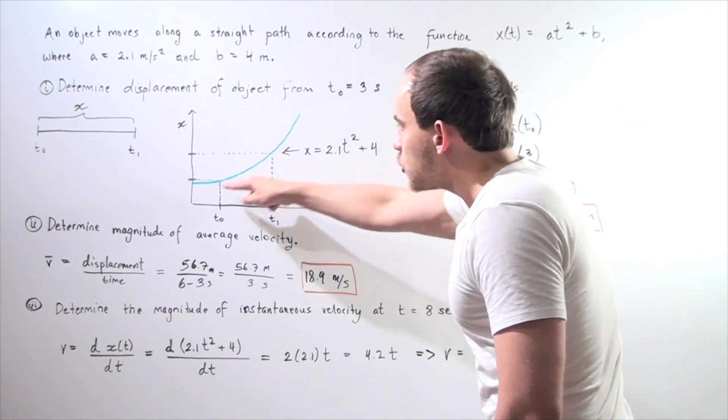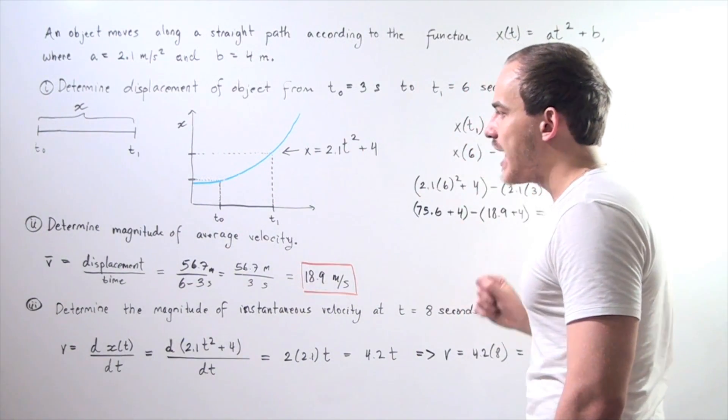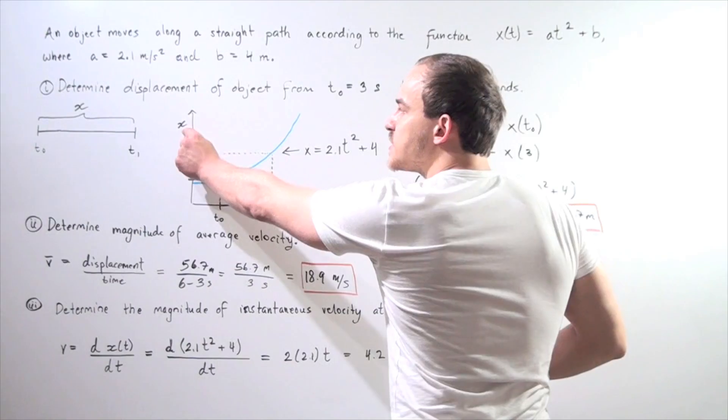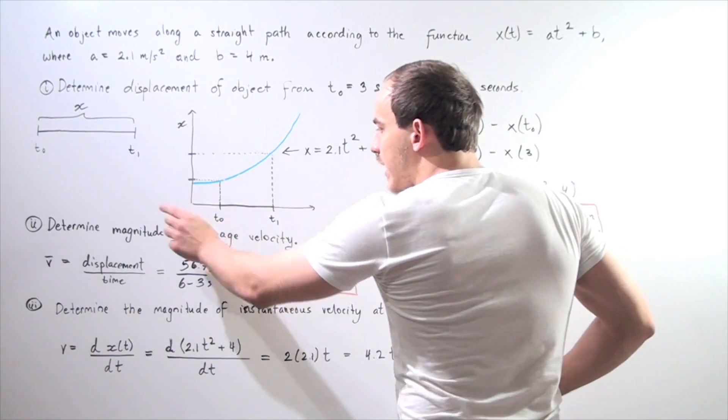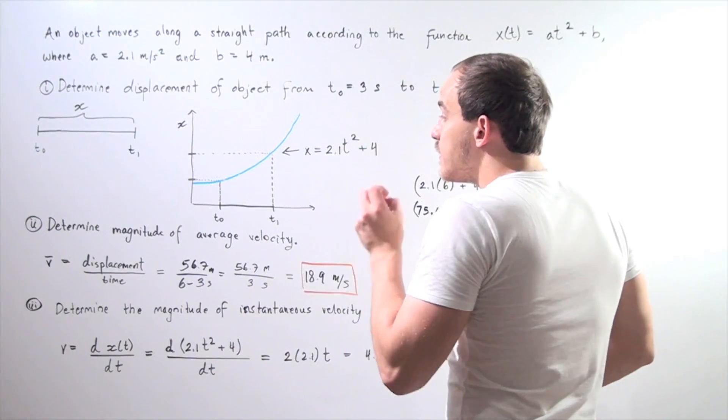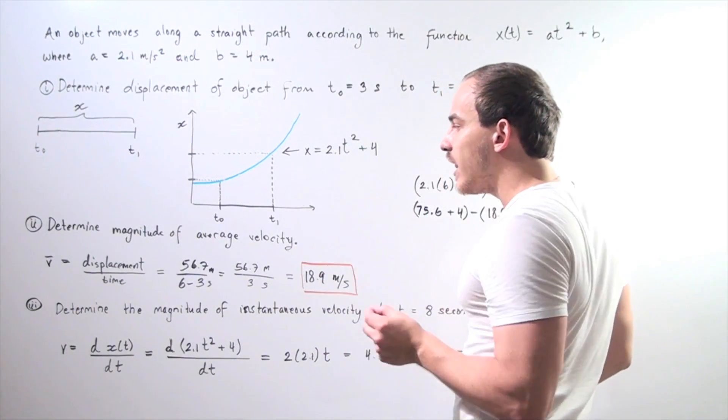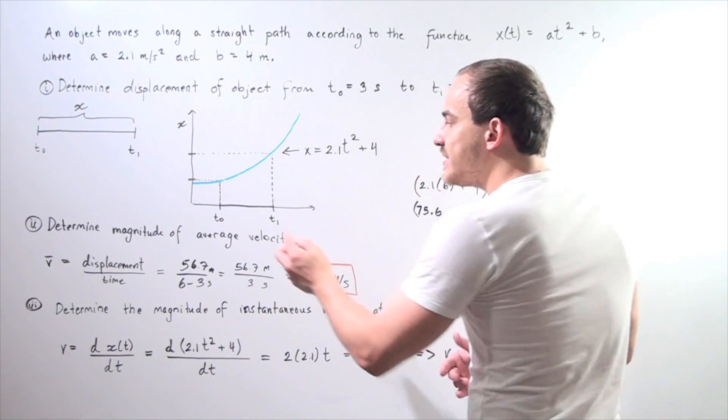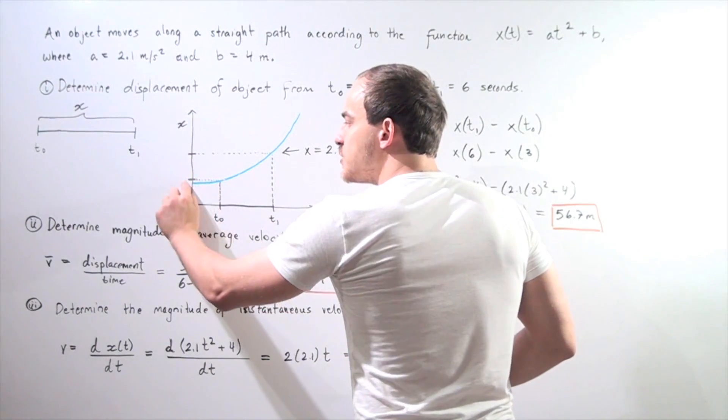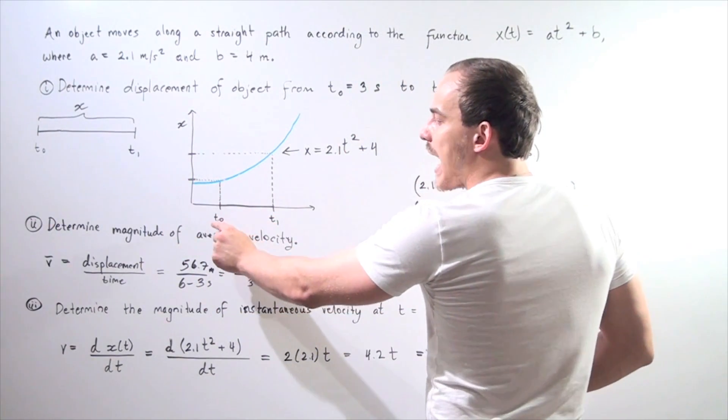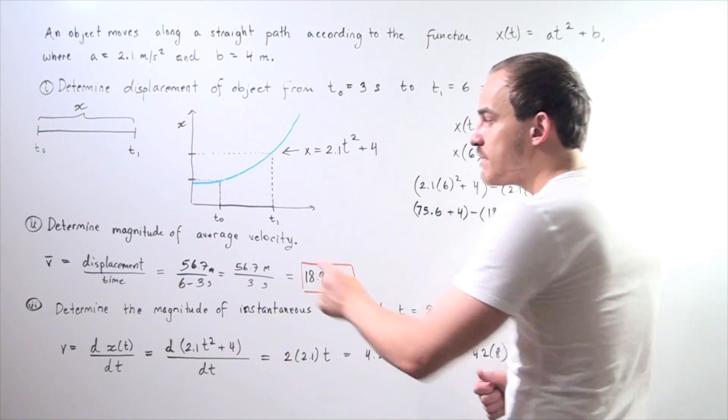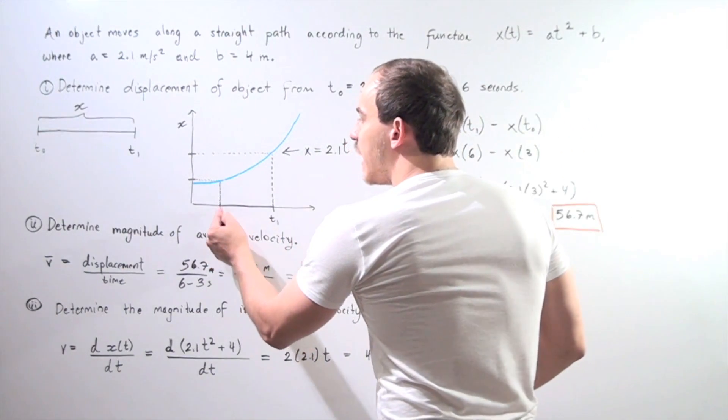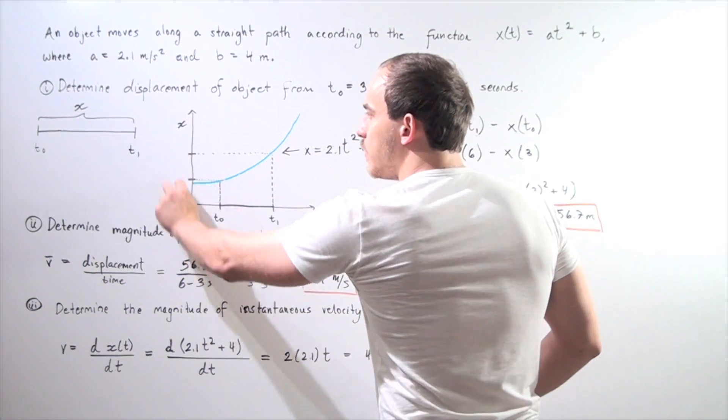What this equation tells us is that if this is the x-axis and the y-axis, where the y-axis is our displacement given by x and this is our x-axis given by our time, then if we choose any time value, let's say time t₀, we will have a corresponding x value by going up and to the left. At 3 seconds, we can find how far our object displaced by finding our corresponding x value.